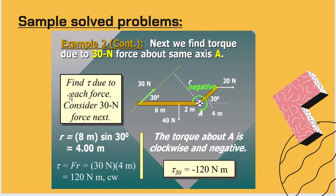Next, due to the 30 N force about the same axis A. Using the given 8 meters — we get 8 meters on the other side — and the angle is also sine 30. So the torque FR equals 30 N multiplied by 4 meters, giving 120 N·m. The torque about A is clockwise and therefore negative: −120 N·m.